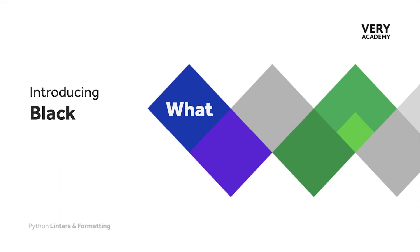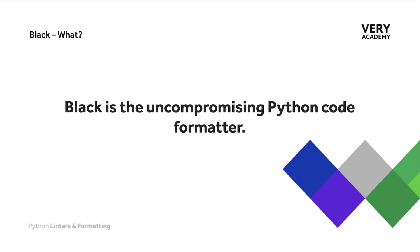So first up, what is Black? Well, simply put - or as Black describes itself - Black is an uncompromising Python code formatter. Black is an auto code formatter; upon saving our code, Black can be configured to automatically format or style our code on the page. This can save the developer time and offers a consistent approach to formatting code consistently throughout our program, making our code easier to read and review.